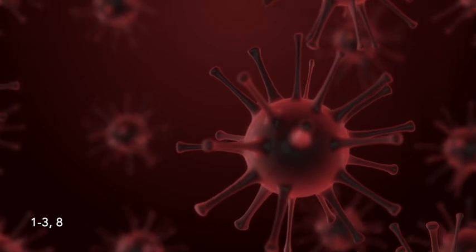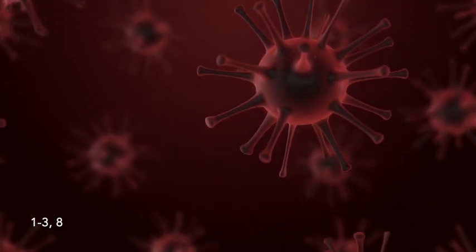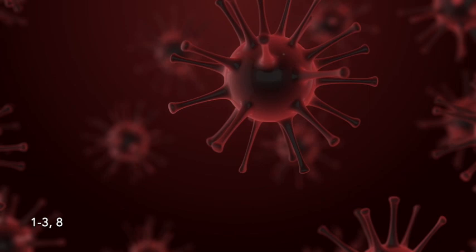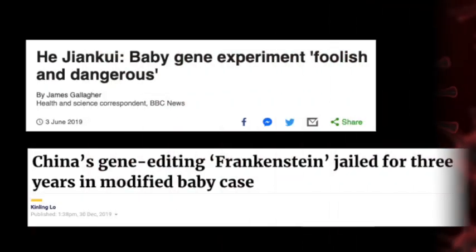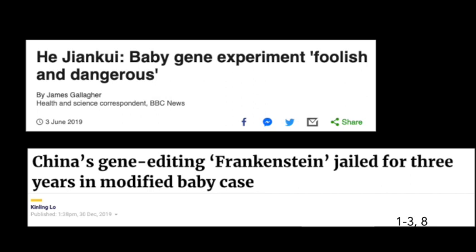He inactivated CCR5, a receptor that allows for the virus to invade healthy cells. His actions sparked outrage in the academic community, although his colleagues who were aware of his actions at the time did not take measures to stop him. Though his intent was to increase resistance to HIV, the inactivation of CCR5 can cause further genetic implications and increase a child's risk to other diseases, such as the West Nile virus.